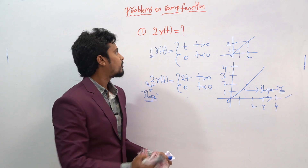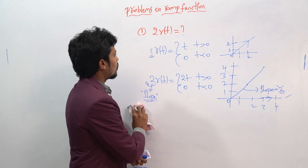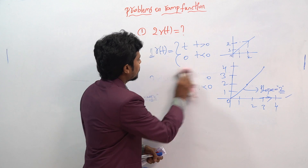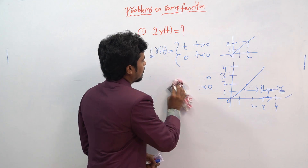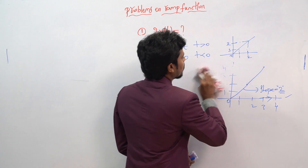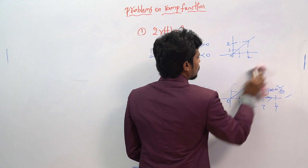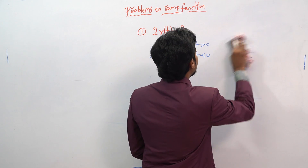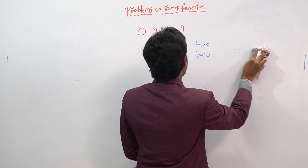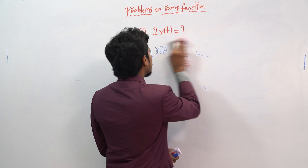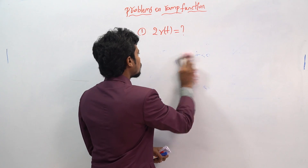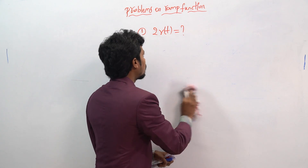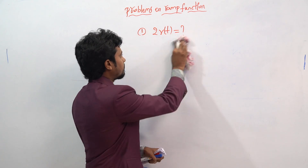Similarly, if you want to write a similar question with a minus symbol, that will be minus 2 into r(t). What will happen? Let's see the plot for minus 2 into r(t).